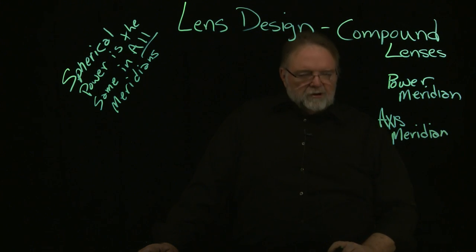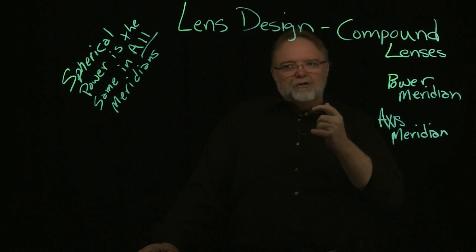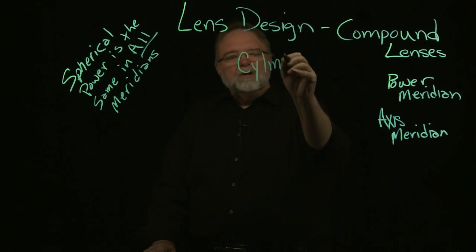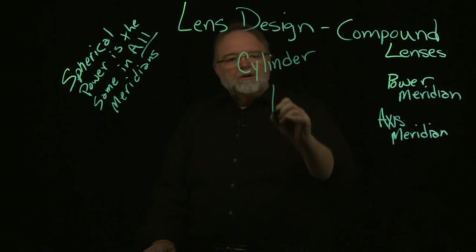You'll understand this a little bit further once we get into this in 1040 anatomy and physiology, talking about why we need a lens like this. This is a cylindrical lens, a cylinder.